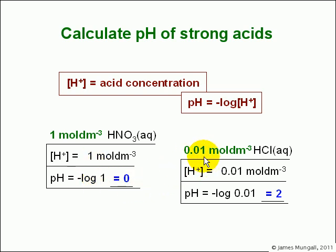If we have 0.01 mole per decimeter cubed HCl, we'd say the H plus concentration is 0.01, because all of that HCl is broken apart to form H plus ions and Cl minus ions, and the pH is minus log of 0.01, which is two.